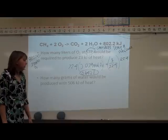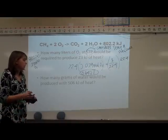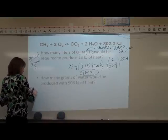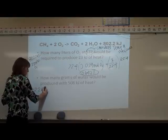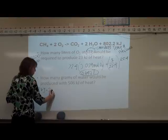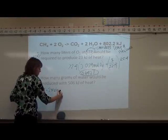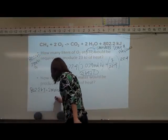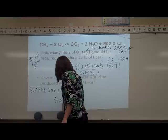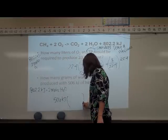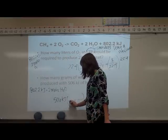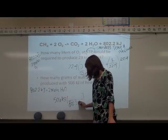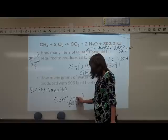The next thing we want to do is we want to know how many grams of water would be produced if we started with 506 kilojoules of heat. We need to write down our equivalent statement. We know 802.2 kilojoules equals 2 moles of H₂O. Let's start. We're going to start at 506 kilojoules. We want to get two moles of water first.